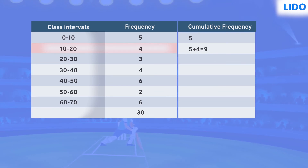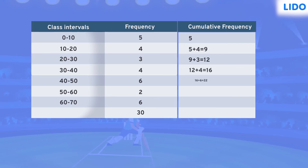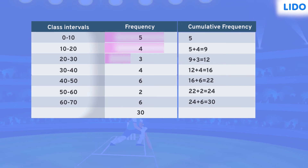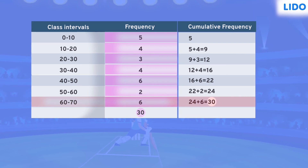Proceeding further, we will find the cumulative frequency of the next class, 20 to 30, which will be the sum of 9 and 3, which equals 12. In a similar way, the cumulative frequency of all further classes can be calculated. But observe carefully — the sum of all frequencies equals the cumulative frequency of the last class, which is 60 to 70.